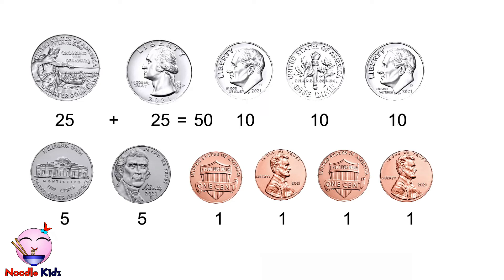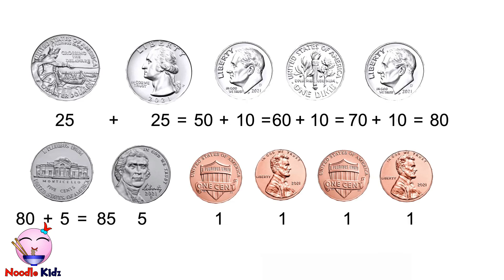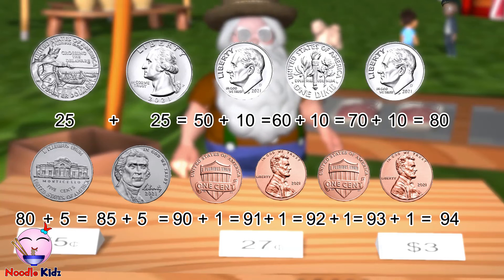Twenty-five plus twenty-five equals fifty. Fifty plus ten equals sixty. Sixty plus ten equals seventy. Seventy plus ten equals eighty. Eighty plus five equals eighty-five. Eighty-five plus five equals ninety. Ninety plus one equals ninety-one. Ninety-one plus one equals ninety-two. Ninety-two plus one equals ninety-three. Ninety-three plus one equals ninety-four. There, you have ninety-four cents left.